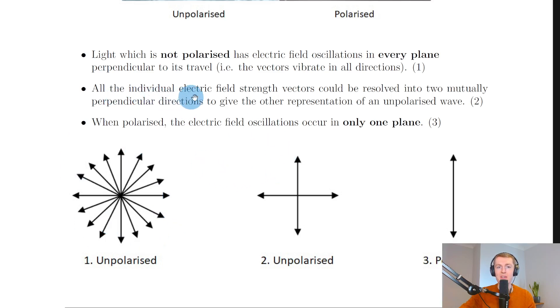However, it then says all the individual electric field strength vectors could be resolved into two mutually perpendicular directions to give the other representation of an unpolarised wave. So we could combine all of these lines in between the vertical and the horizontal ones into just a vertical and horizontal component of the electric field. And you can see that here for number two, where we've got the vertical and horizontal components of the electric field oscillations. And that is a simplified version of the unpolarised light from the left hand side.